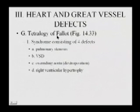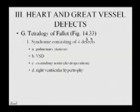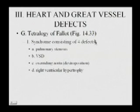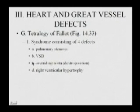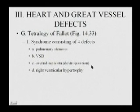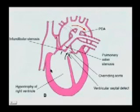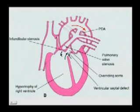We start with another defect first — the tetralogy of Fallot, from Figure 14-33 in the text. This is a syndrome that has four defects within it: pulmonary stenosis, ventricular septal defect, overriding aorta or dextral position of the aorta, and right ventricular hypertrophy. We'll explain these as we proceed to the next two illustrations.